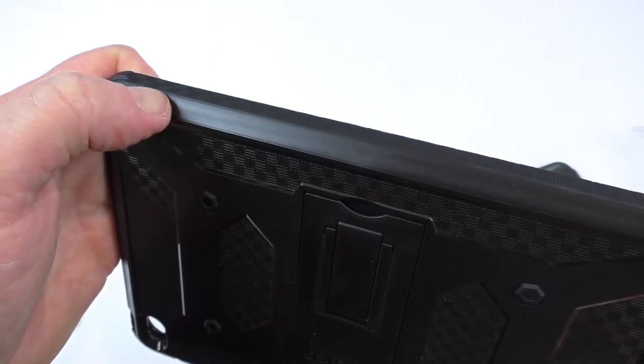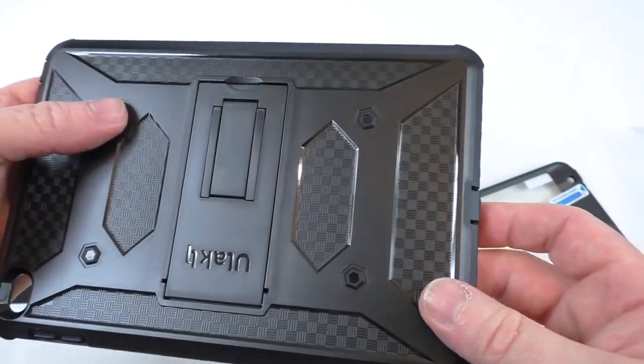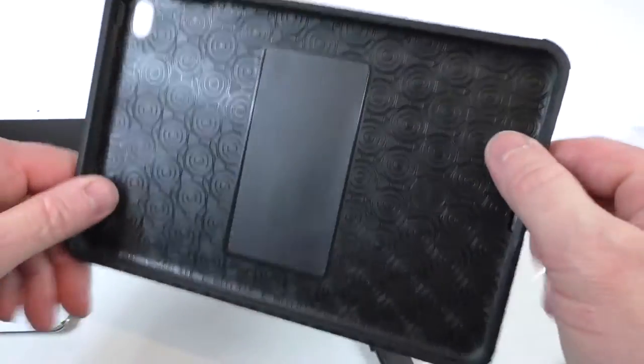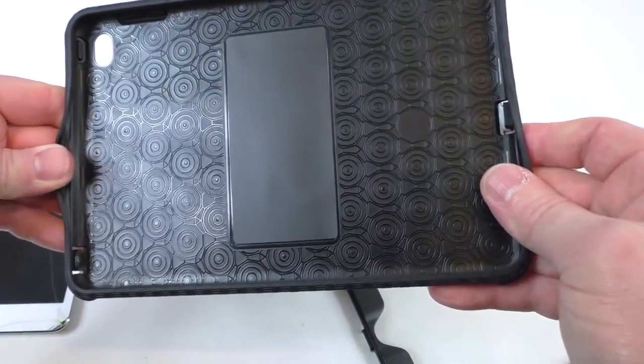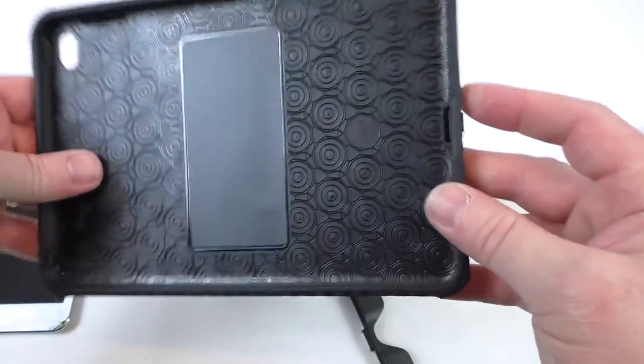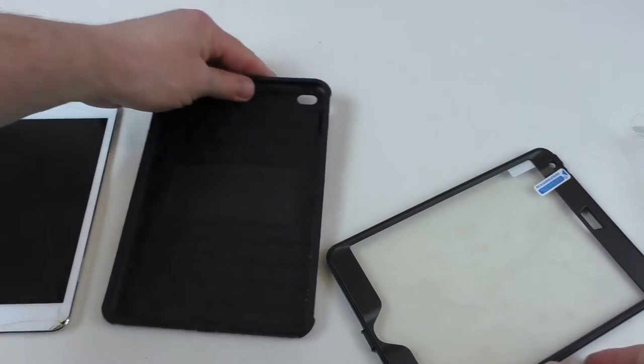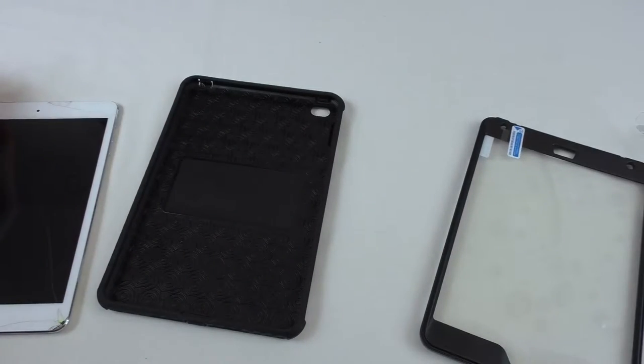You can't even really—there's the seam there where the two parts are molded together, the plastic and the rubber. Really nice construction actually, really nice. You've got all your port covers and stuff like that.